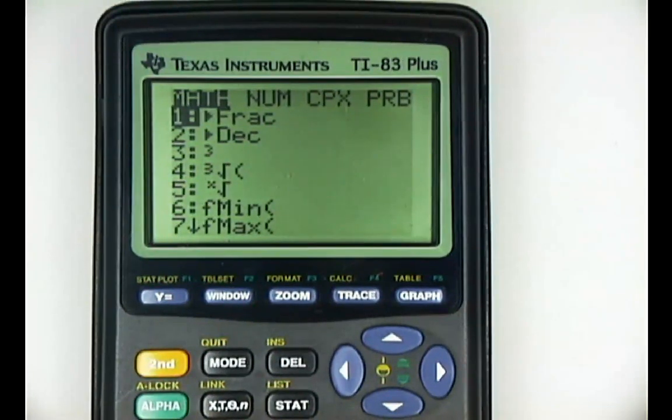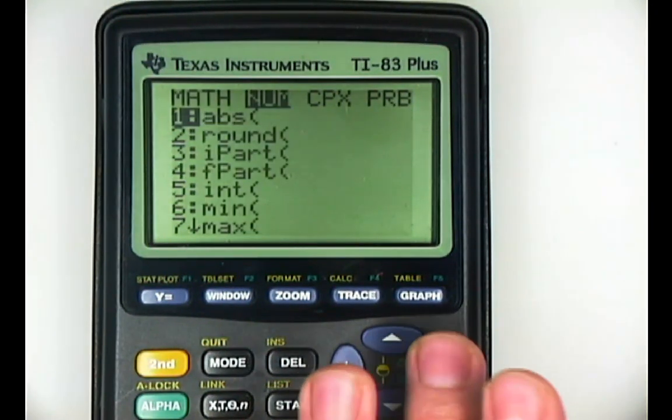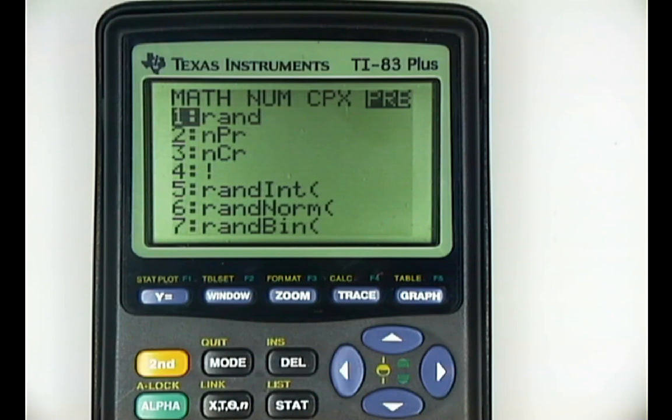Now you'll notice it brings up all of these wonderful options. Let's scroll over with our arrow keys to PRB, which means probability and statistics. Let's scroll down to nPr, which stands for n permutation r.